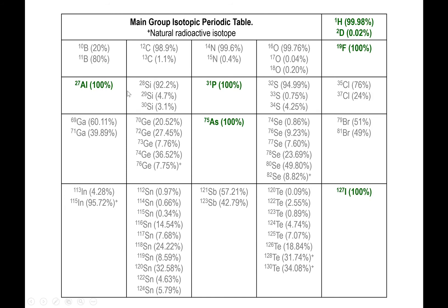First of all, let's highlight the fact that some of the elements do only have one natural isotope present, like fluorine, phosphorus, arsenic, aluminum, and iodine, they only have one isotope present naturally.